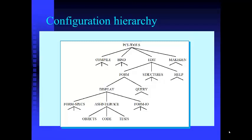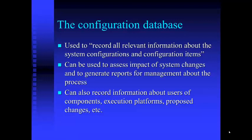After you have a unique name, you need to put things into a configuration database or, at the very least, a spreadsheet. The configuration database is used to record all relevant information about configurations and configuration items. It can be used to assess the impact of system changes, generate reports for management, and record information about users of components, execution platforms, proposed changes, etc.